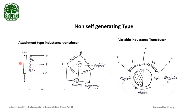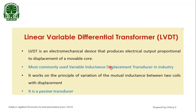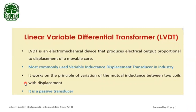This is the same as the attachment type, but here we can measure angular motion. Another important one is the Linear Variable Differential Transformer — LVDT. It is an inductive-type transducer, an electromechanical device that produces an electrical output proportional to the displacement of a movable core. The most commonly used variable inductance transducer in industry is the LVDT, and it works on the principle of variation of mutual inductance between two coils with displacement.